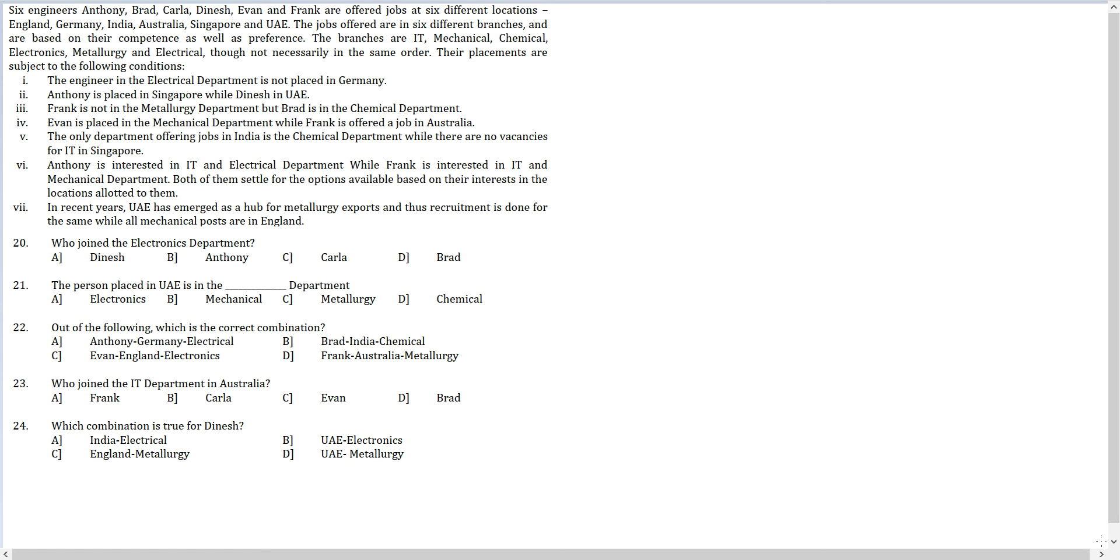The jobs offered are in six different branches and are based on their competence as well as preference. The branches are IT, Mechanical, Chemical, Electronics, Metallurgy and Electrical. At this time pay attention to the fact that I cannot be dealing with only the initials because Electrical, Electronics, Metallurgy, Mechanical are irritating, so I would have to write down slightly longer forms. So I have three parameters to distribute. First one is name, the second one is location and the last one is the department or the branches.